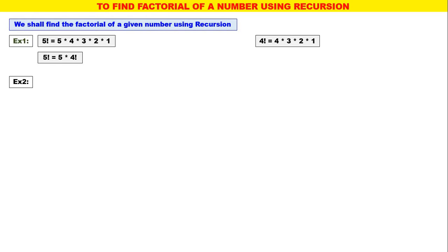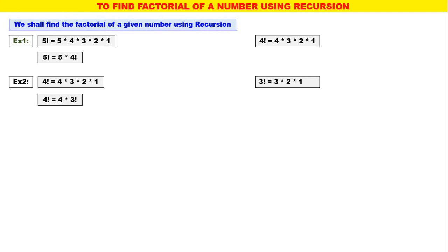We shall take one more example. What is 4 factorial? 4 into 3 into 2 into 1. But what is 3 factorial? 3 into 2 into 1. Now, in 4 factorial, instead of writing 3 into 2 into 1, we can write down 3 factorial. That is, 4 factorial is equal to 4 into 3 factorial.